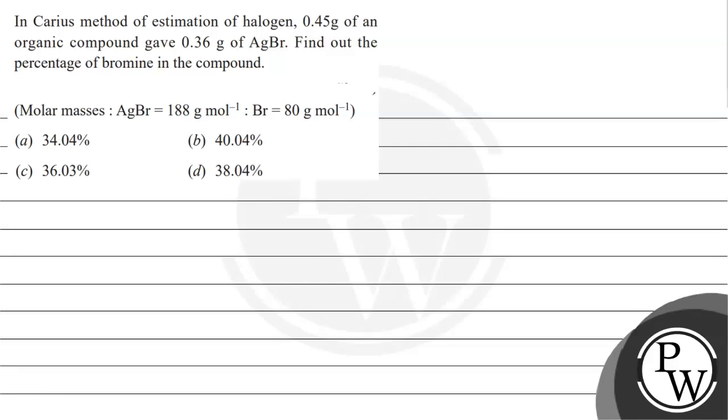Hello, children. Let's read this question. The question says, in Carius method of estimation of halogen, 0.45 gram of an organic compound give 0.36 gram of AgBr. Find out the percentage of bromine in the compound.